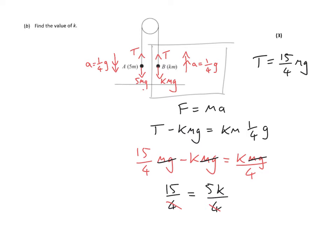And if I multiply through by 4, I get 15 equals 5K, and then divide through by 5, I get K is equal to 3.